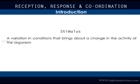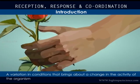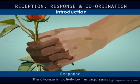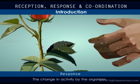A variation in conditions that brings about a change in the activity of the organism is called a stimulus. In this case, pricking of the thorn is the stimulus. The change in activity by the organism is called a response. In this case, retracting the hand is the response.